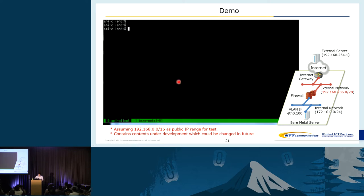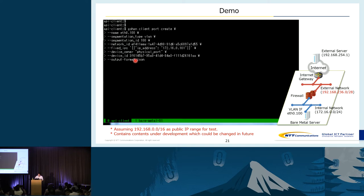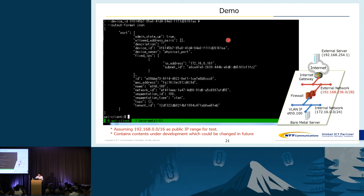Then, using the physical port as a device ID, we will create the port resource, specifying the segmentation ID — VLAN ID 100 — and also specifying the network to be attached. This is the result. This is also compatible with the Neutron API. We extended some of the attributes like segmentation ID and segmentation type, but the rest of the resource is the same.